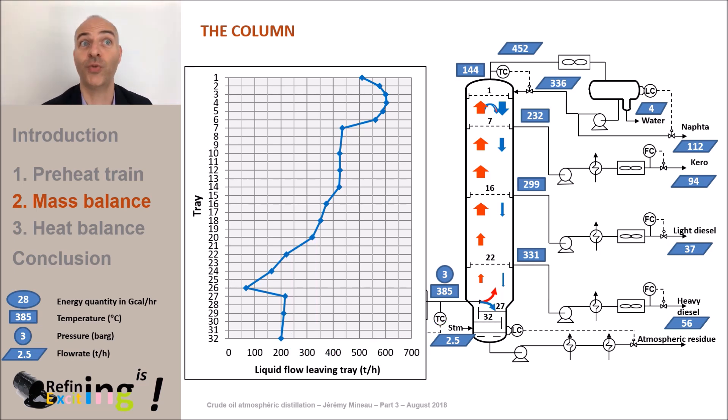We see that the tray where we have the least liquid flow is the tray located just above the feed tray. In our case, we see that this liquid flow is about 75 tons per hour or about 15% of the distillation throughput.